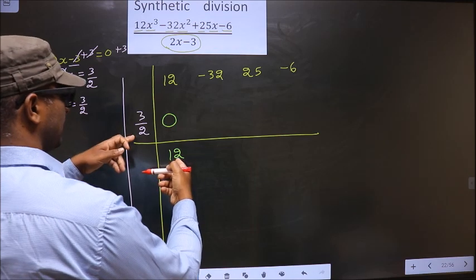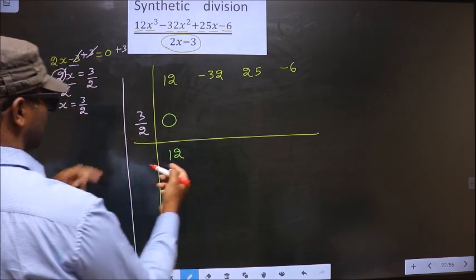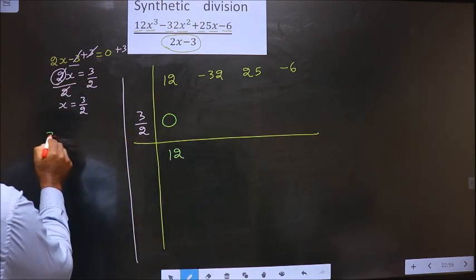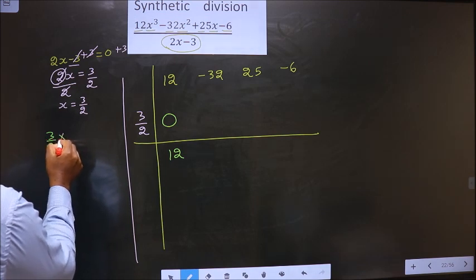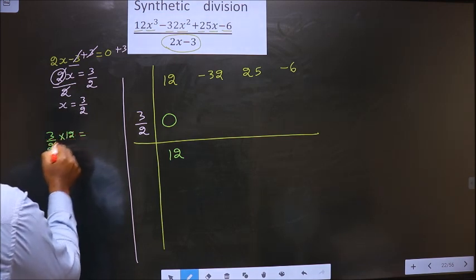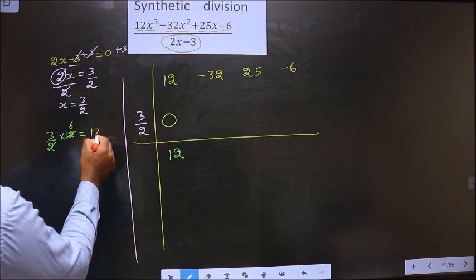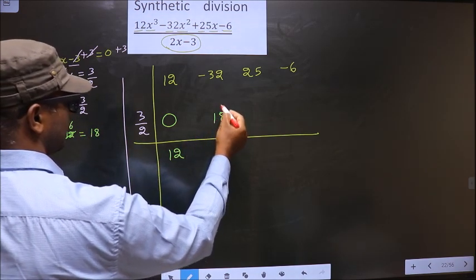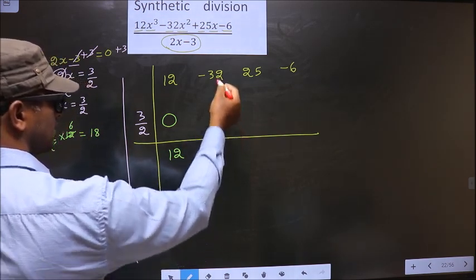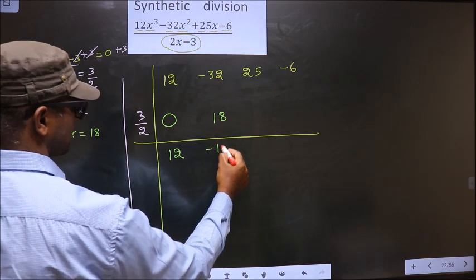Now we should multiply these 2 and write here. That is 3 by 2 into 12. We get 18. So here you write 18. Now add these 2, we get minus 14.